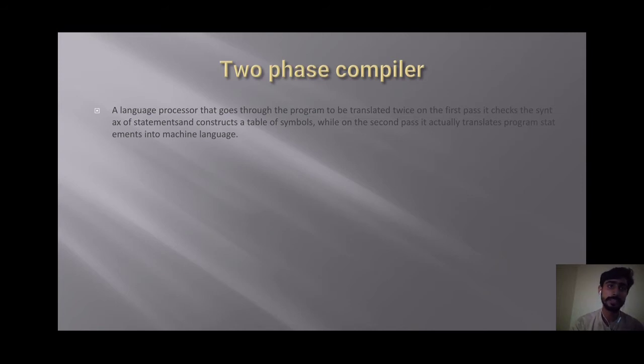Two-phase compiler. A language processor that goes through the program to be translated twice. On the first pass, it checks the syntax of a statement. It can construct a table of symbols. While on the second pass, it actually translates program statements into machine language.